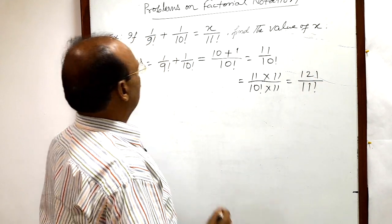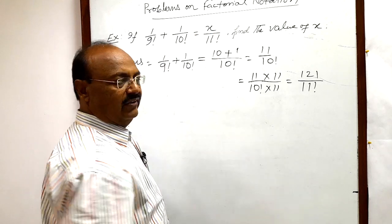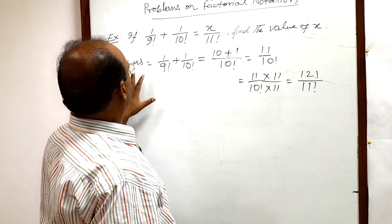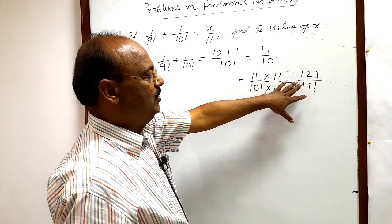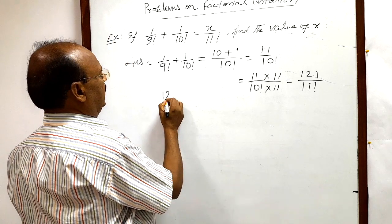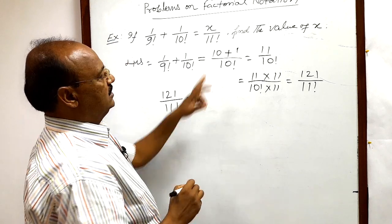So whenever we will compare this one, x by 11 factorial with x by 11 factorial, we can get the value of x very easily. So after simplifying it, LHS is becoming how much? LHS is 121 by 11 factorial and RHS is how much?